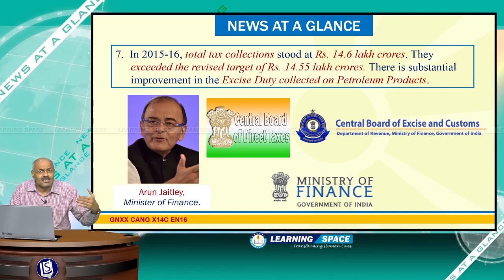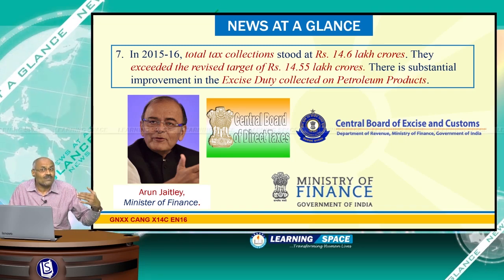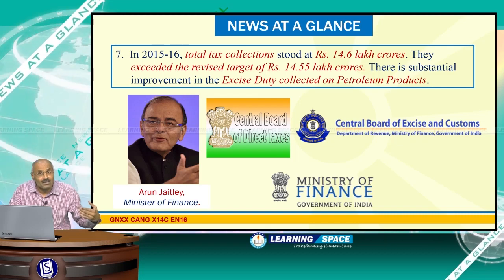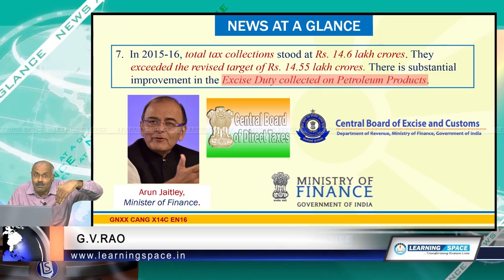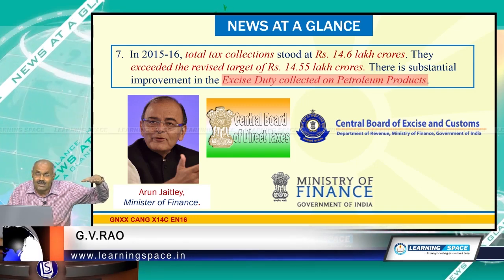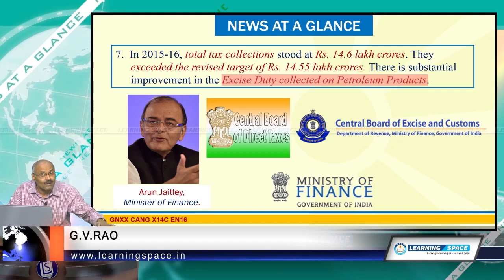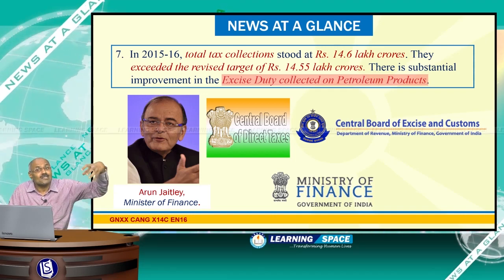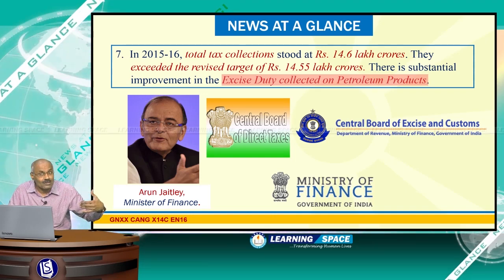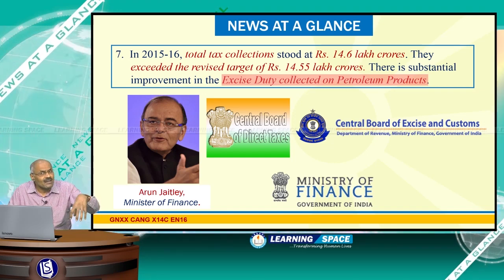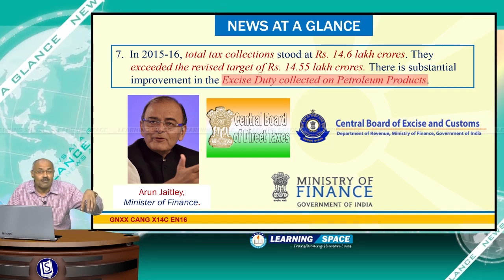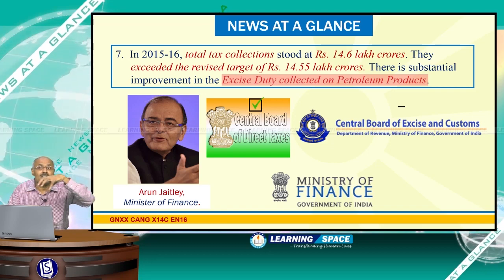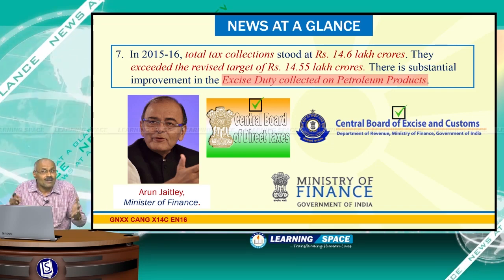In 2015-16, total tax collections stood at 14.6 lakh crore rupees, exceeding the revised target of 14.55 lakh crore rupees. The government was able to achieve this target prominently because of higher excise duty collections on petroleum products. As petroleum product prices reduced drastically in the world market, instead of passing the benefit to consumers, the government imposed excise duty several times. Government revenue comes through direct taxes monitored by the Central Board of Direct Taxes, and indirect taxes collected by the Central Board of Excise and Customs, both under the Department of Revenue, Ministry of Finance.